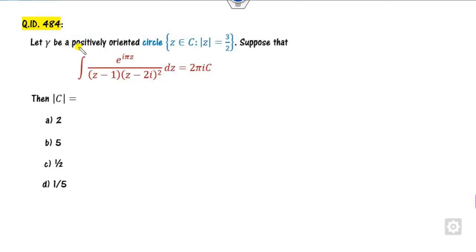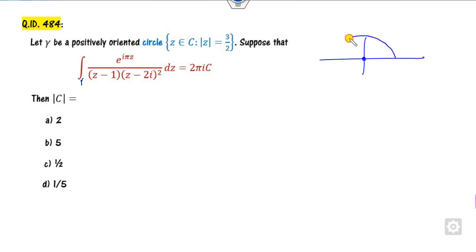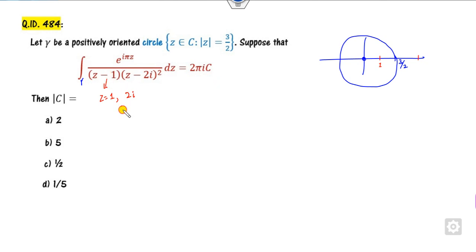If gamma is the positive oriented circle, consider the integration over gamma. You have to find the modulus of C. Looking at the circle: the center is 0 and the radius is 3/2, that is 1.5. Now looking at the singularities: here is 1, and this is 2i with modulus 2, which is outside the circle. So the only singularity inside is Z equals 1.